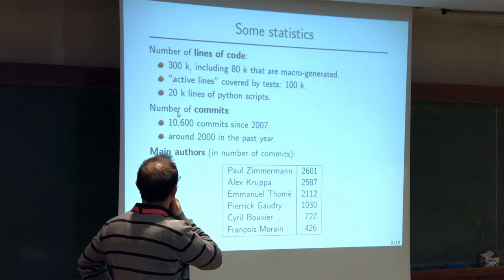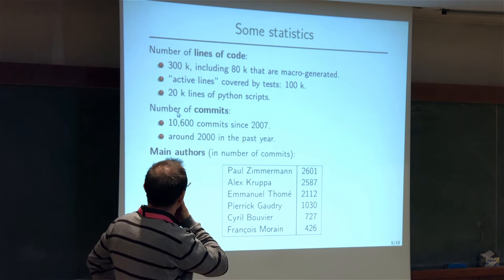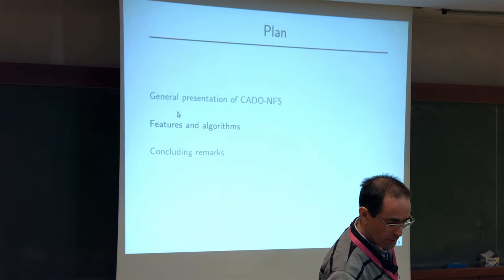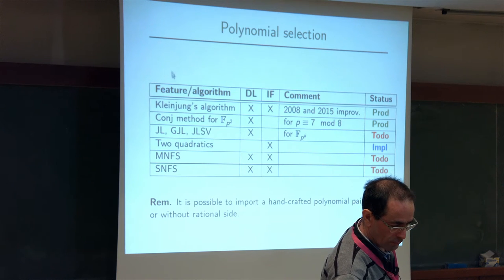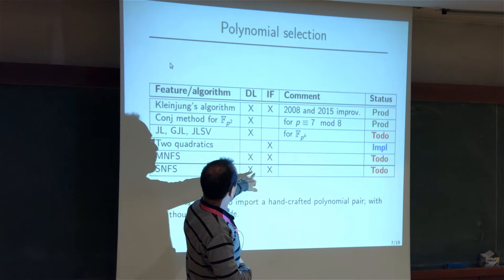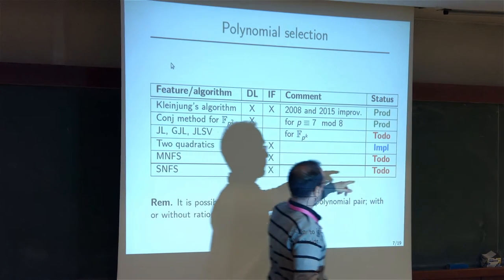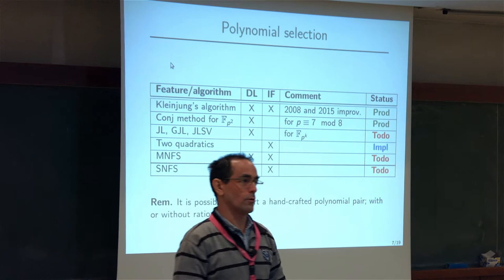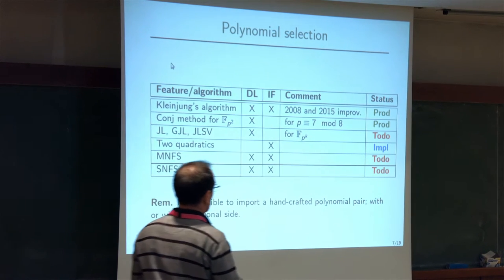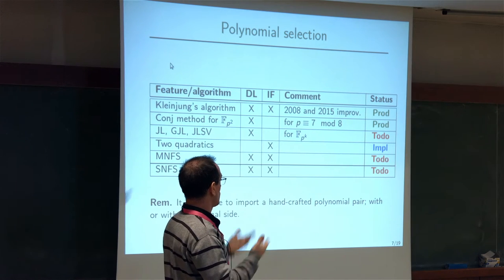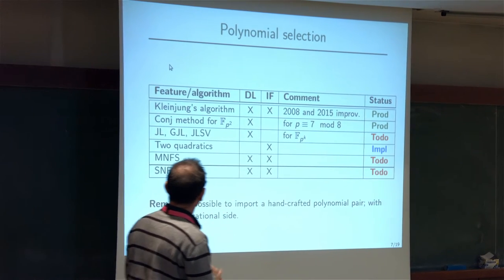We have some figures about the code: a lot of commits and about 300 thousand lines of code. I'll describe the algorithms implemented in CADO-NFS. DL is for discrete log, EF is for integer factorization. On the right you have different colors: 'prod' is for code implemented and used in production, in blue 'impl' means the code is implemented but not used in production, and 'to do' is code we want to implement.